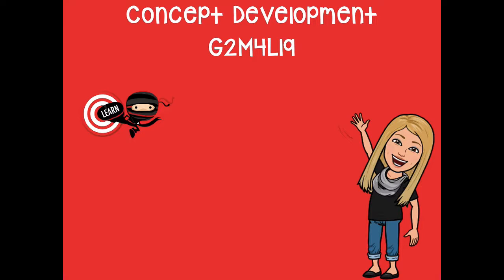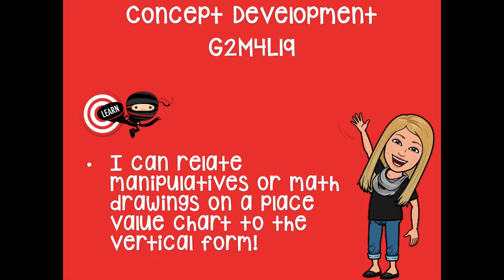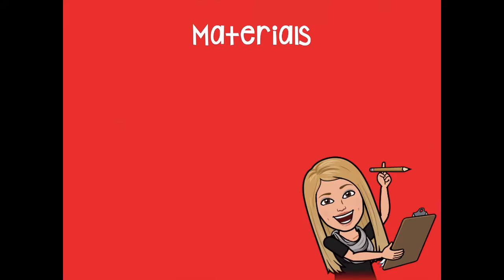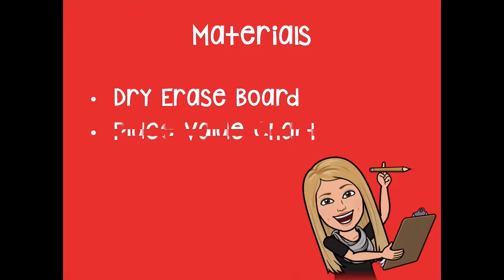Hey friends, it's Mrs. Walker. For our lesson today we're going to continue working with our place value chart and the vertical form. Our learning goal says: I can relate manipulatives or math drawings on a place value chart to the vertical form. The materials you'll need are your dry erase board and your place value chart — if you don't have one, just draw hundreds, tens, and ones on your board.